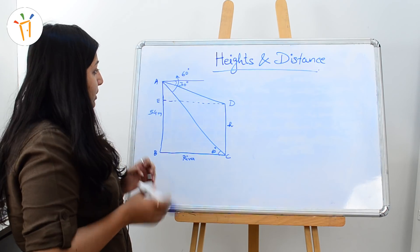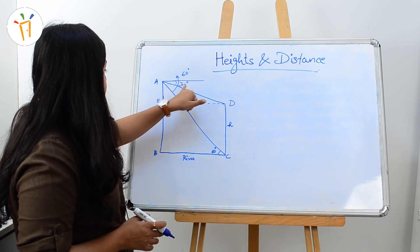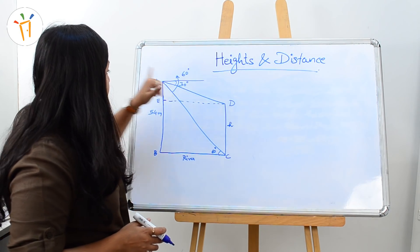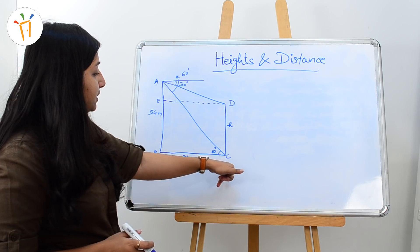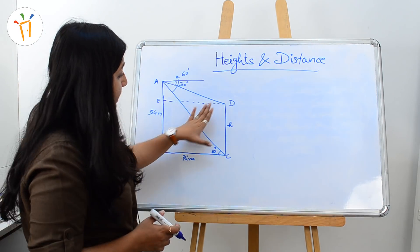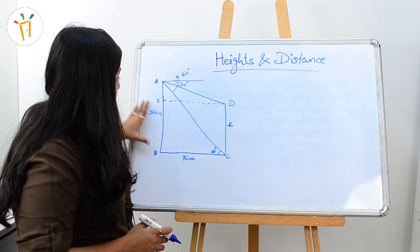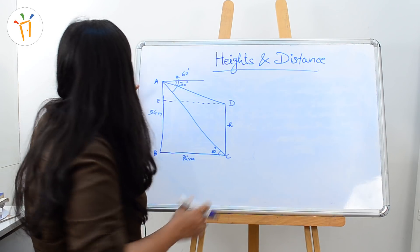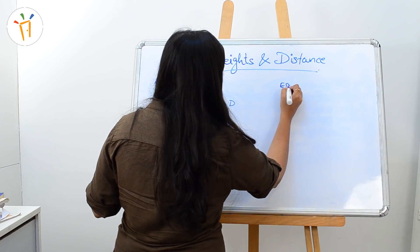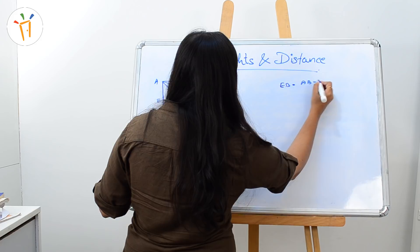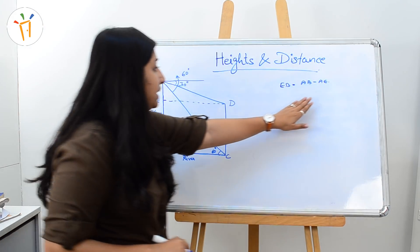Our question also tells us that temple AB makes an angle of depression of 30 degrees at point D and 60 degrees at point C, which are the top and foot of temple CD. Our motive is to find CD. In order to find CD, we need to find EB. In order to find EB, we have to find AB and AE, so EB would be AB minus AE. Let's find AE.